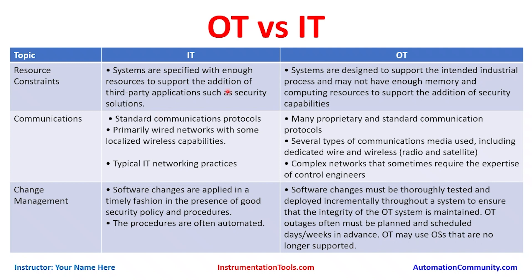Moving ahead, we'll see how IT and OT are different across three areas: resource constraints, communications, and change management. For resource constraints, IT systems are specified with enough resources to support the addition of third-party applications such as security solutions. OT systems, however, are designed to support the intended industrial process and may not have enough memory or compute resources to support the addition of security capabilities.